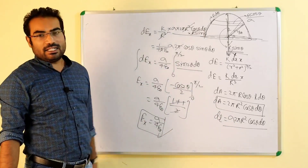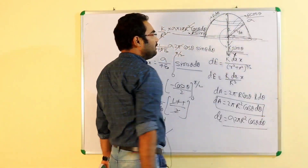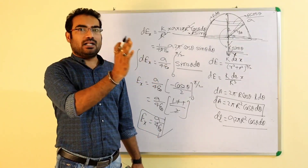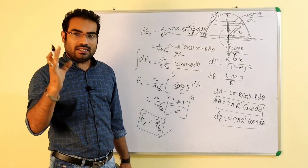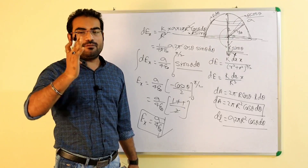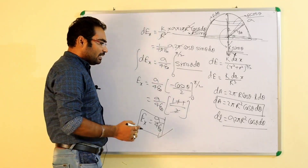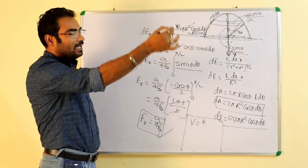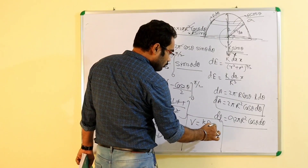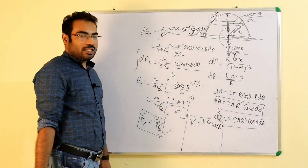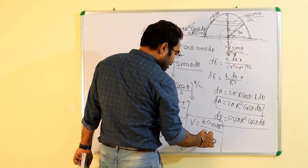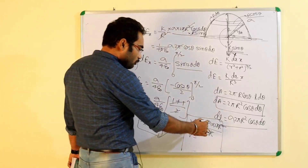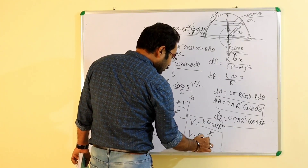Ab potential ki baat karte hain. Is hemisphere ka surface center se equally distance par hai — radius ke barabar distance par. To potential nikalna bahut aasan hai: seedha V = kq/r ho jayega, aur q is hemisphere pe charge jitna hai. To V = kq/r, aur q = sigma into 2π R². k = 1/(4π ε₀), to π se cut ho gaya, sigma by 2ε₀ into R aa jayega. Yeh electric potential at the center hai.